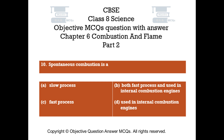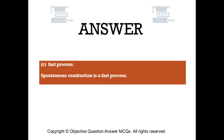Question number 10. Spontaneous combustion is: Option A, a slow process. Option B, both a fast process and used in internal combustion engines. Option C, a fast process. Option D, used in internal combustion engines. The right answer is Option C. Spontaneous combustion is a fast process.